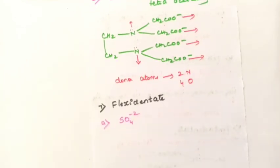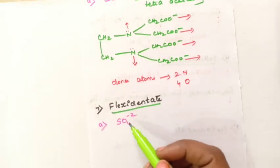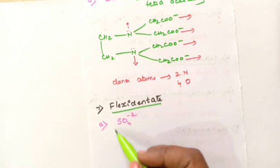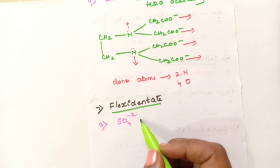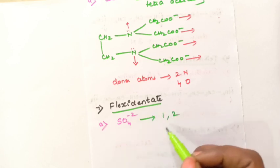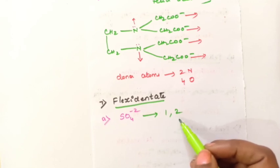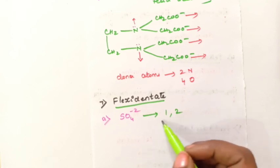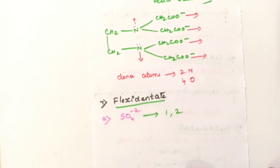Next is fluxidentate ligand. The example is sulfate ion, SO4²⁻. It does not have fixed denticity, meaning it does not form one type of coordinate bond. In some coordination compounds it will form only one coordinate bond, and in some others it can form two coordinate bonds. This number keeps changing, therefore it is called a fluxidentate ligand.